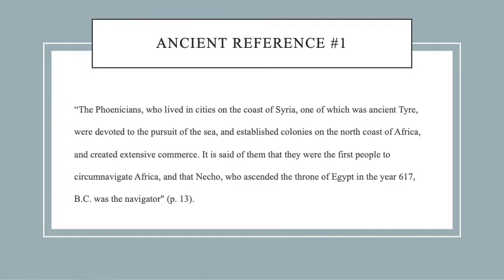The first example can be found on page 13 of The Tragedy. It states: 'The Phoenicians, who lived in cities on the coast of Syria, one of which was ancient Tyre, were devoted to the pursuit of the sea and established colonies on the north coast of Africa and created extensive commerce. It is said of them that they were the first people to circumnavigate Africa, and that Necho, who ascended the throne of Egypt in the year 617 BC, was the navigator.' This establishes historical lineage — identifying colonization and maritime trade in the ancient Mediterranean far before European global colonization.